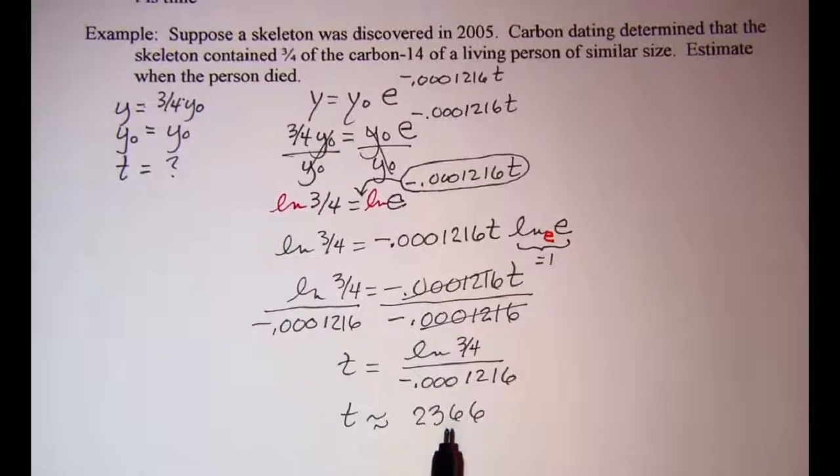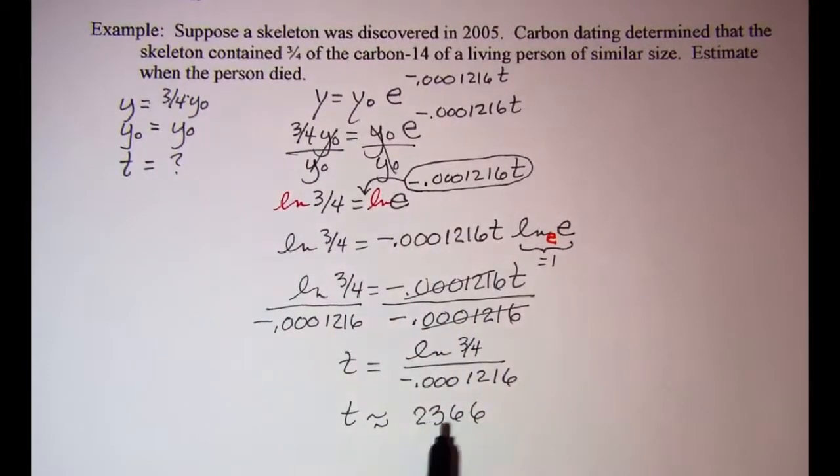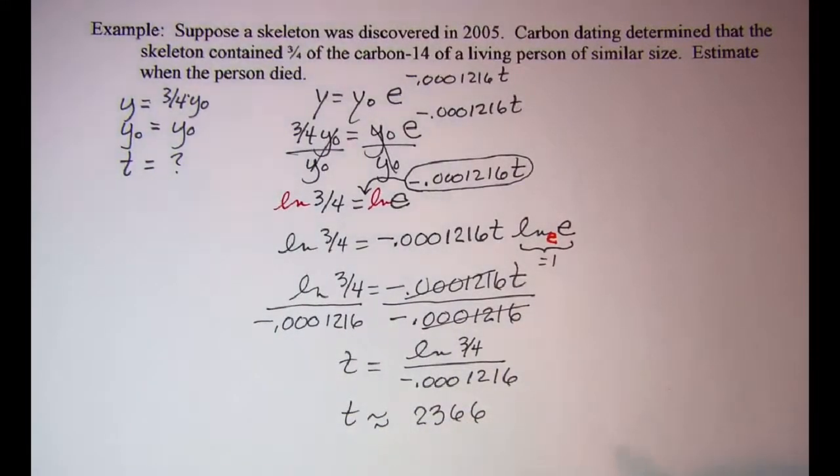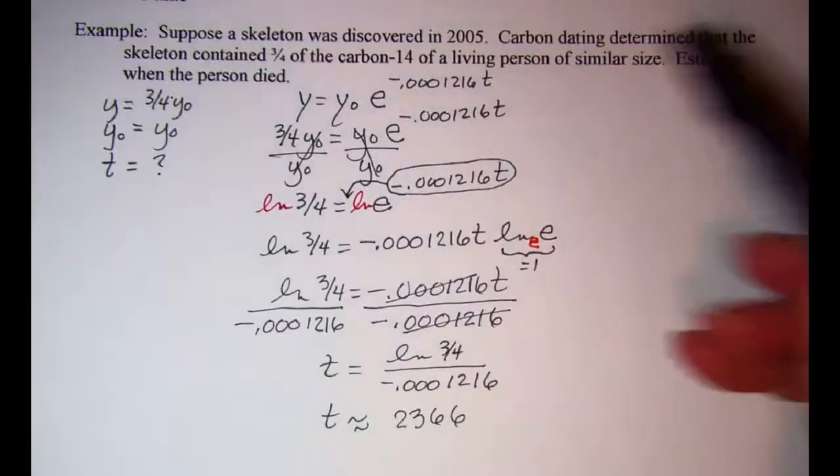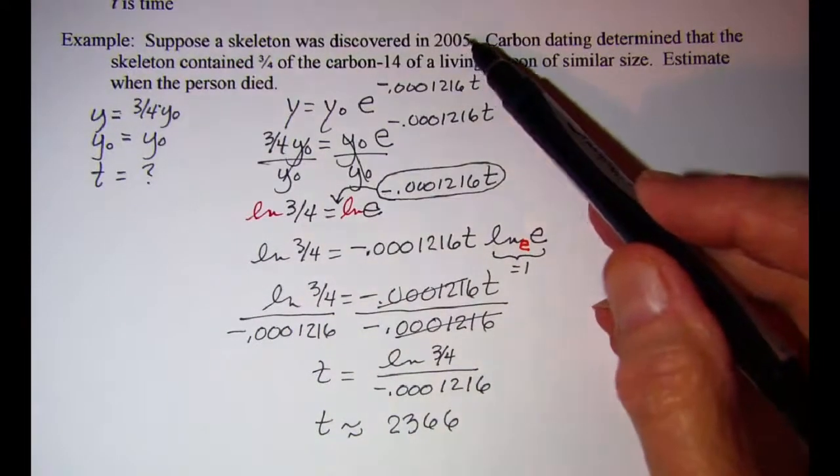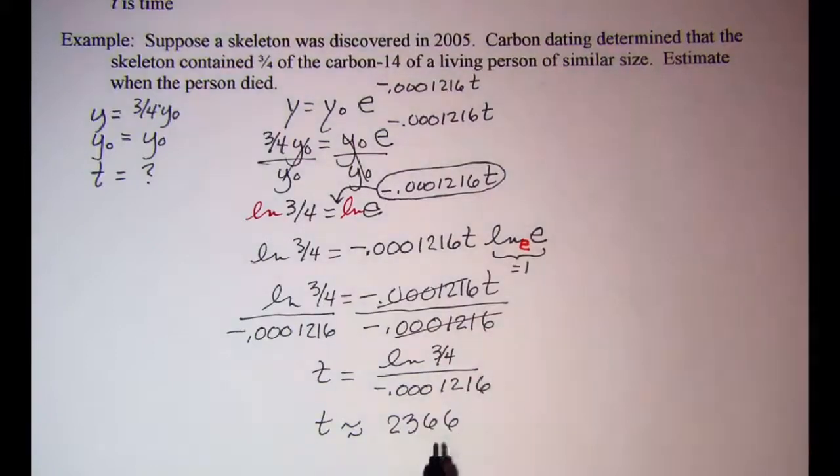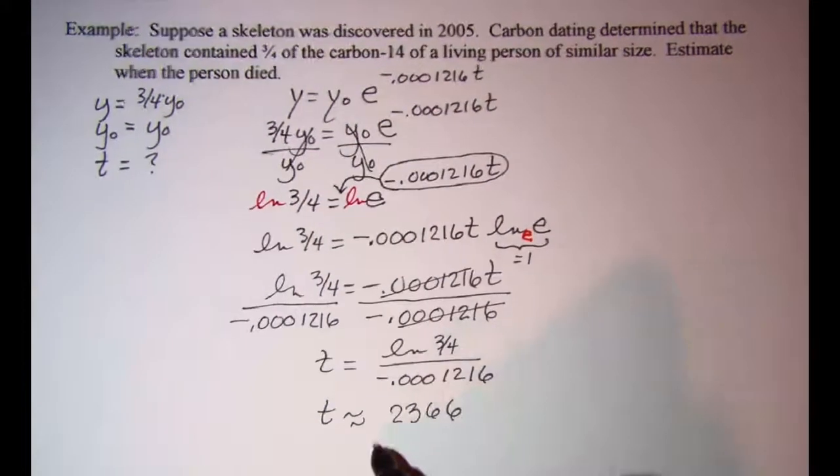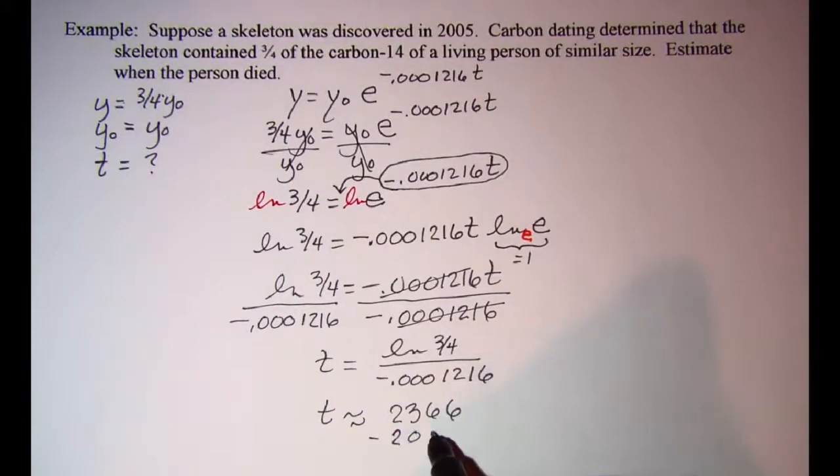So that means then that our person died about 2,366 years ago. So if the skeleton was discovered in 2005, that means that they died about 361 BC.